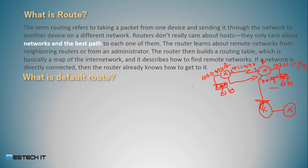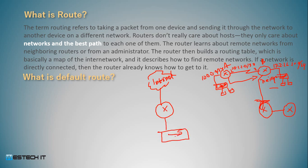What is the default router? The default router is connected to the inter-network. The inter-network is connected to the router, so now I have a connected connection to many other devices on the inter-network.